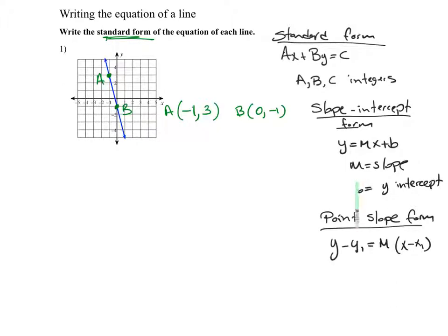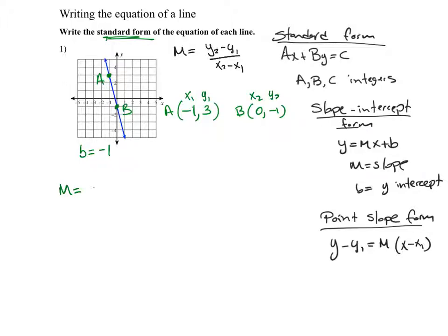The point-slope form is y minus y1 equals m times x minus x1, where m is the slope. I can identify my y-intercept because I can see that this line is intersecting the y-axis at point B, so b equals negative one. Now I find the slope: m equals y2 minus y1 over x2 minus x1, which gives me negative 1 minus 3 divided by 0 minus negative 1, so negative 4 divided by 1, which is negative 4.